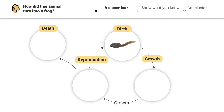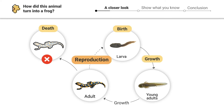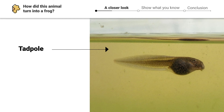When amphibians are born, we call them larvae. As they grow, the larvae will become young adults. Then, once they're fully grown, amphibians are called adults. As adults, amphibians can reproduce and lay small eggs, and over time they eventually die. These four phases — birth, growth, reproduction, and death — make up the life cycle of amphibians.